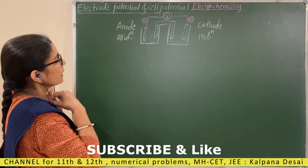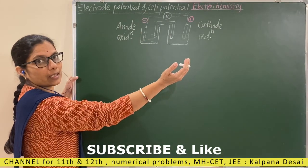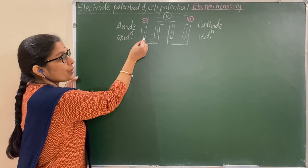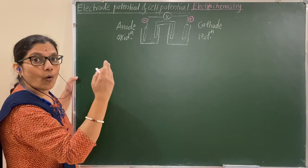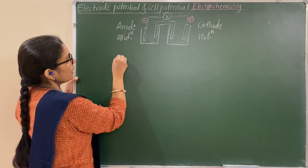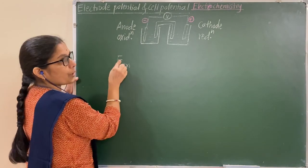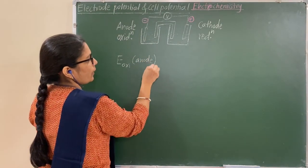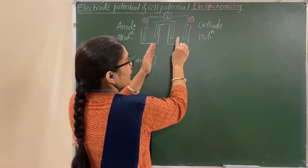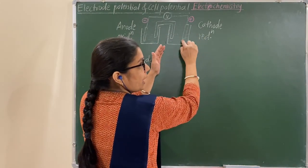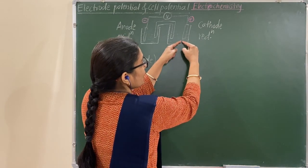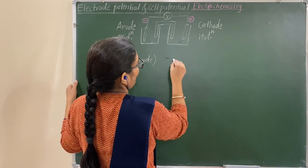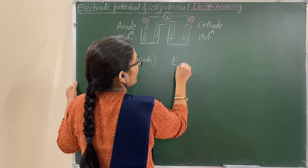In this half cell, the oxidation half reaction takes place. Therefore, the potential difference developed due to that oxidation half reaction is called the oxidation potential — that is the oxidation potential developed at the anode. In the other half cell, at that electrode, the reduction half reaction takes place. Due to that reduction half reaction, the potential difference developed is called the reduction potential — that is the reduction potential at the cathode.